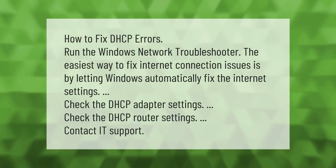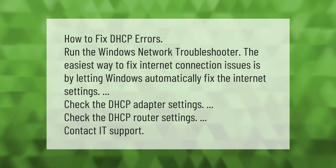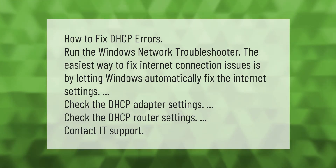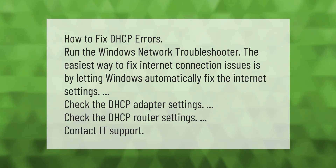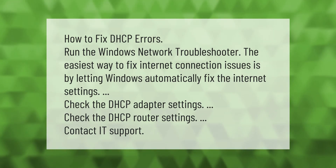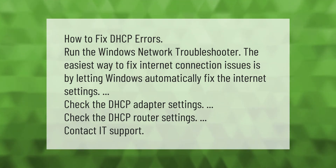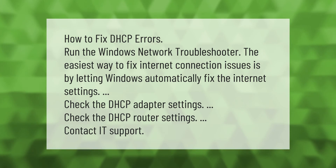To fix DHCP errors, run the Windows Network Troubleshooter — the easiest way to fix internet connection issues is by letting Windows automatically fix the internet settings. You can also check the DHCP adapter settings, check the DHCP router settings, or contact IT support.